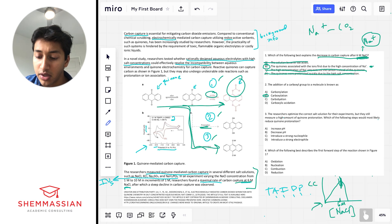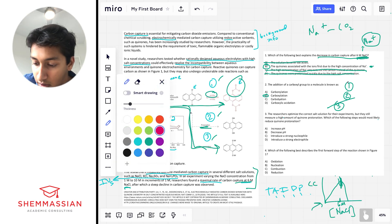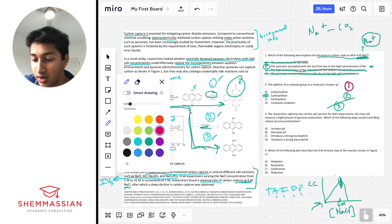Let's look at question three. The researchers optimize the correct salt solution for their experiments, but they still measure a high amount of quinone protonation. Which of the following steps would most likely reduce quinone protonation? Okay, so let's break down this question. And let's break it down in terms of pathway. The researchers say that they don't have to worry about side reaction three, right? They optimize the salt concentration, right? And now we're left of pathway one. Pathway one, they want. So let me do that in a better color. Pathway one, they want to happen, right? So that's what is desired, but they're still getting too much of pathway two. They're still getting too much protonation. So what can reduce quinone protonation?